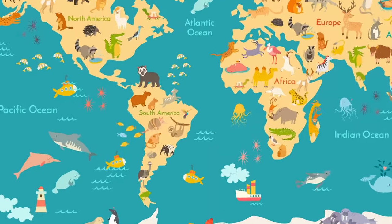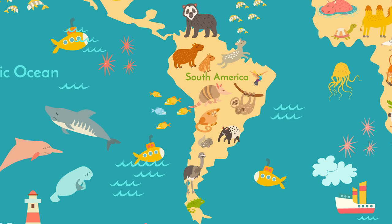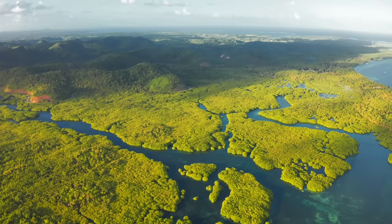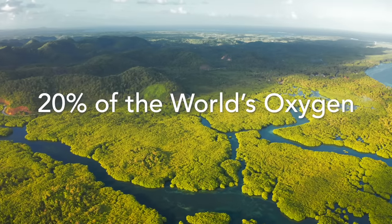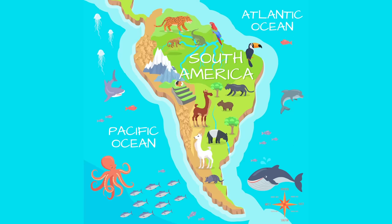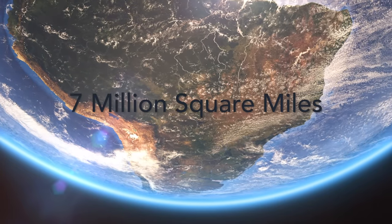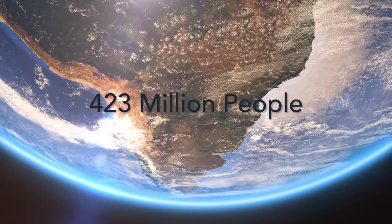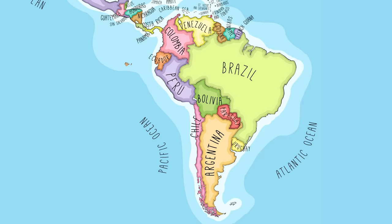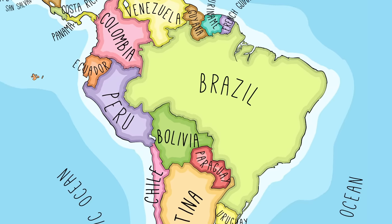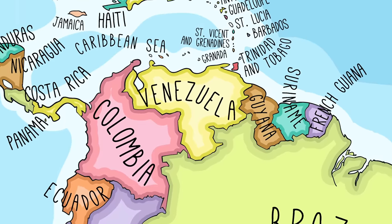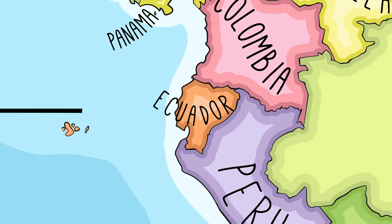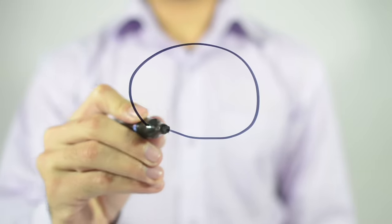When it comes to animal species, there's no place like South America, which is the fourth largest continent on earth. South America is famous for its Amazon rainforest, which produces 20 percent of the world's oxygen — it would be hard for all of us to breathe without the Amazon. It's also home to an amazing 10 percent of all animal species. South America is almost 7 million square miles, has 14 countries, and is home to about 423 million people. Some of the countries you can find there are Brazil, Peru, Argentina, Venezuela, and Ecuador, which gets its name because the equator cuts right through it.